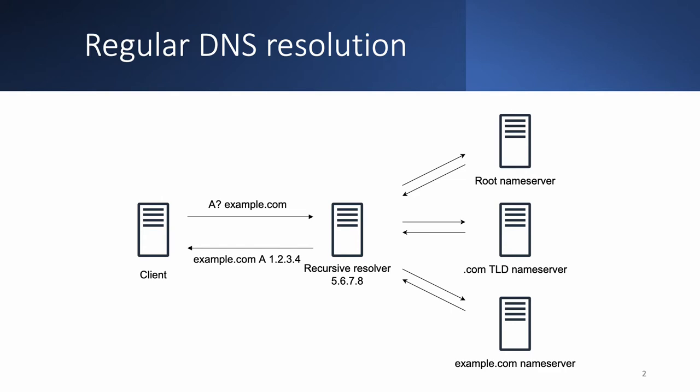Just to recall, here we have a figure describing regular DNS resolution. We assume that all the resolver caches are empty. The client on the left initiates a DNS lookup for the A records of example.com. The recursive resolver receives the request and contacts authoritative name servers down to example.com, and finally returns the answer to the client. The problem is that this is an idealistic and simplified picture — in reality, the DNS resolution process is prone to various manipulation.